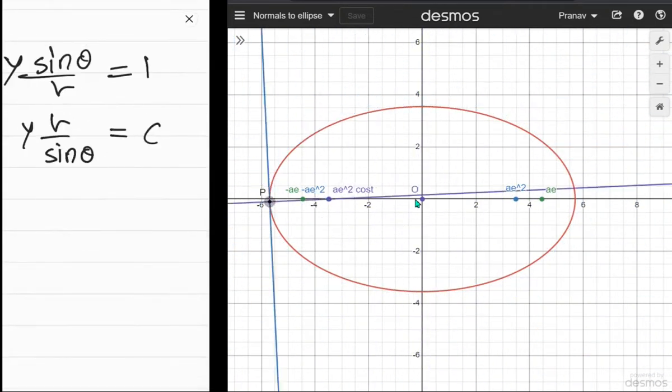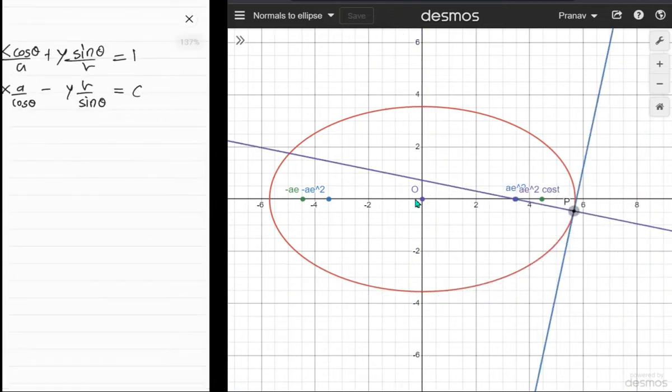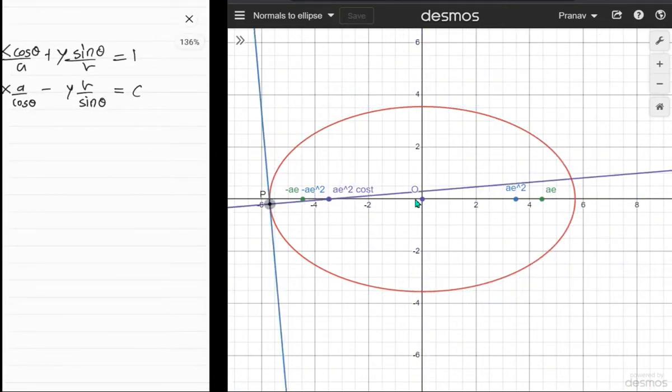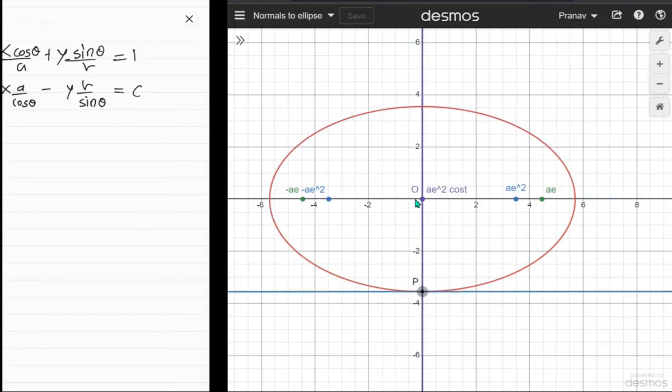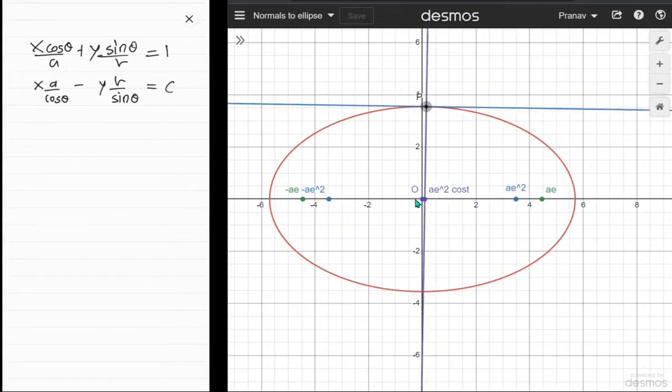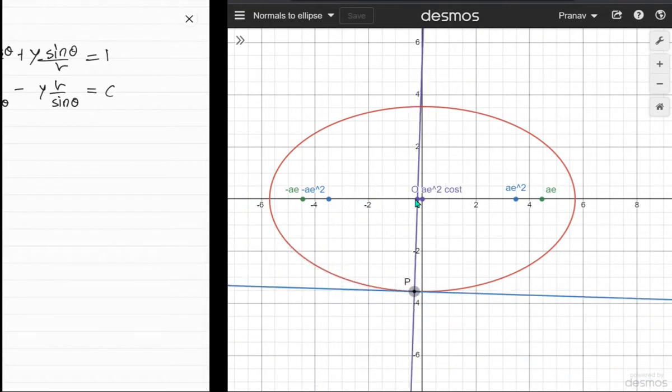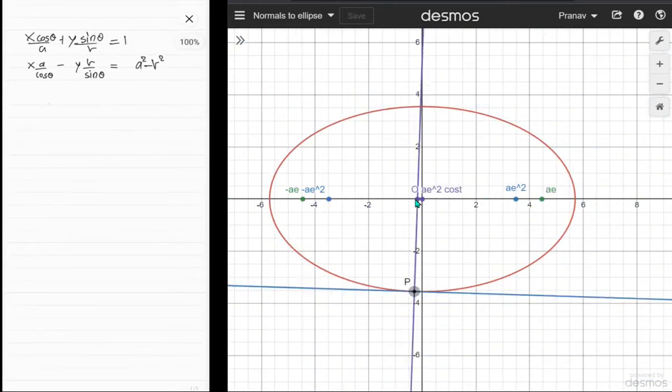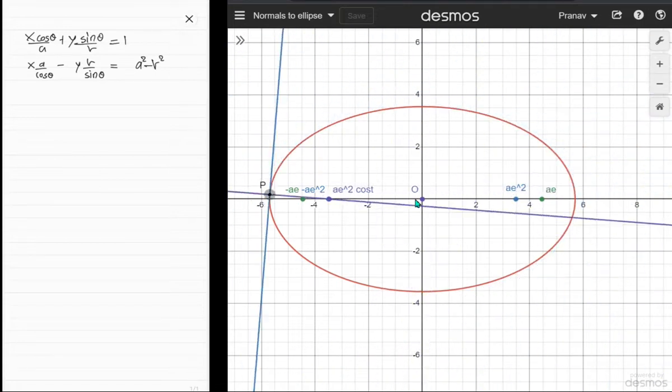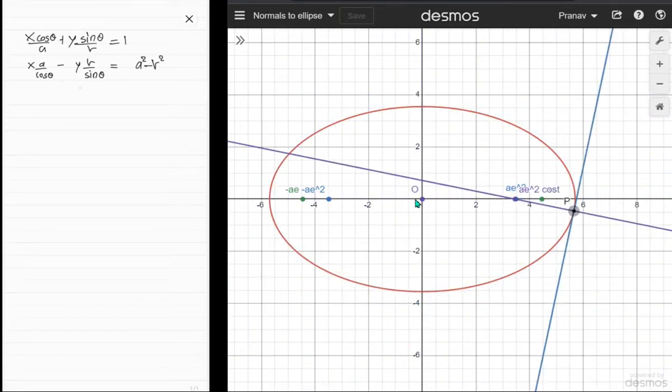The good thing is that the point (a cos θ, b sin θ), parameterized using the eccentric angle, lies on the normal—that's obvious because that's where the normal is. So just put that point into this to get the value of c. From that, we can see our normal equation. What's the x-intercept of this line? For the x-intercept, y is